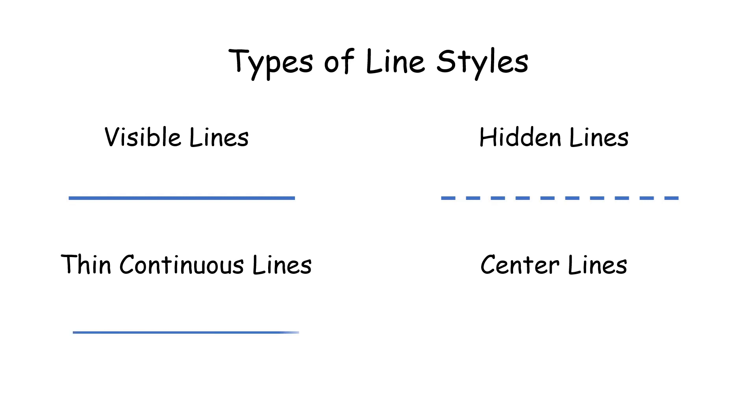Thin continuous lines are just like visible lines but a little bit thinner and usually act as guidelines. Center lines we usually have them when there are circles.